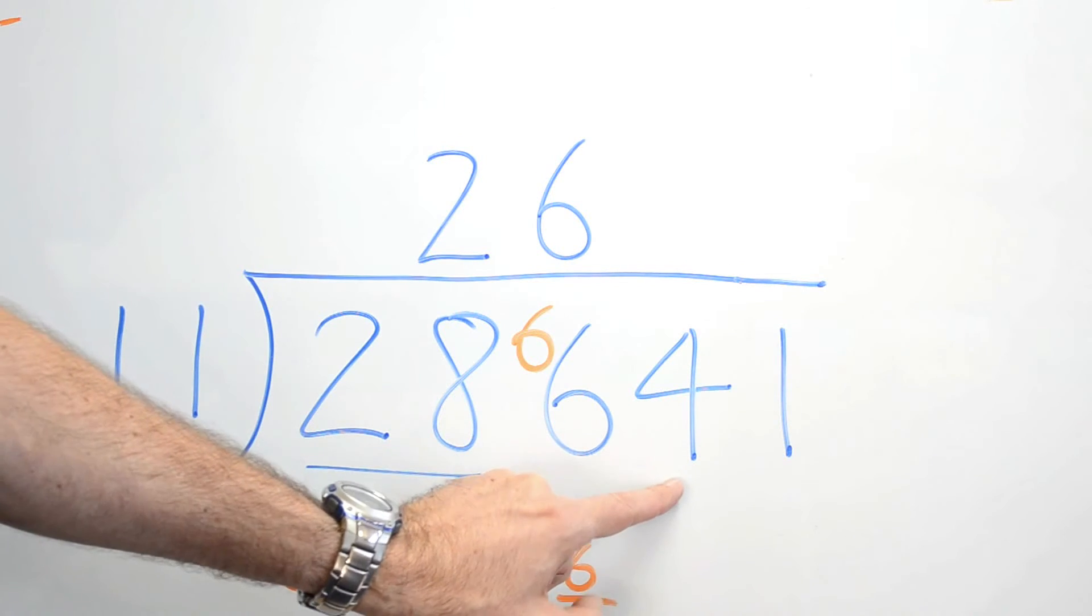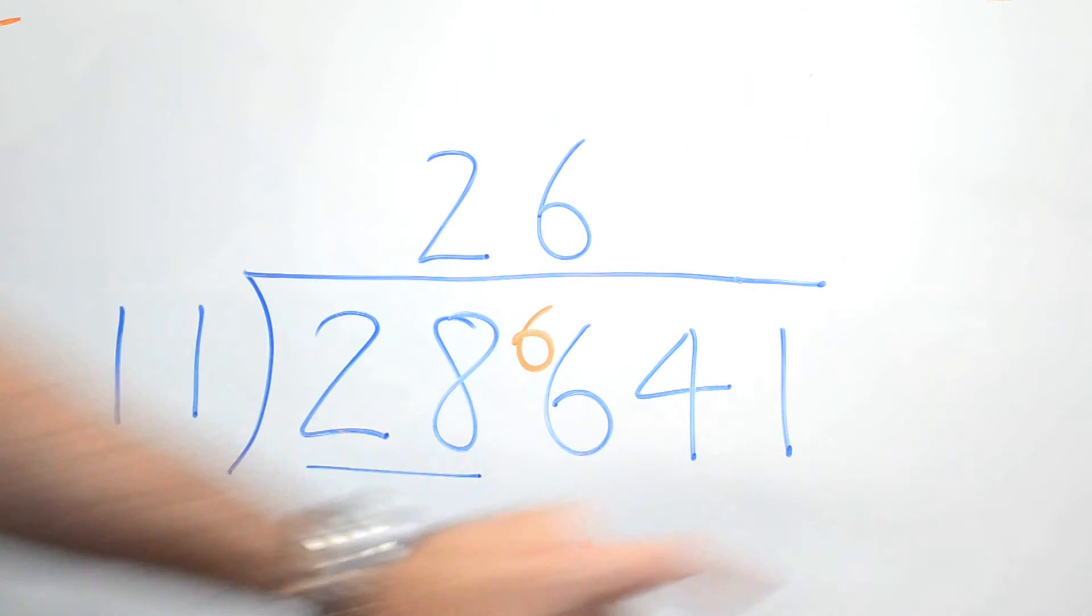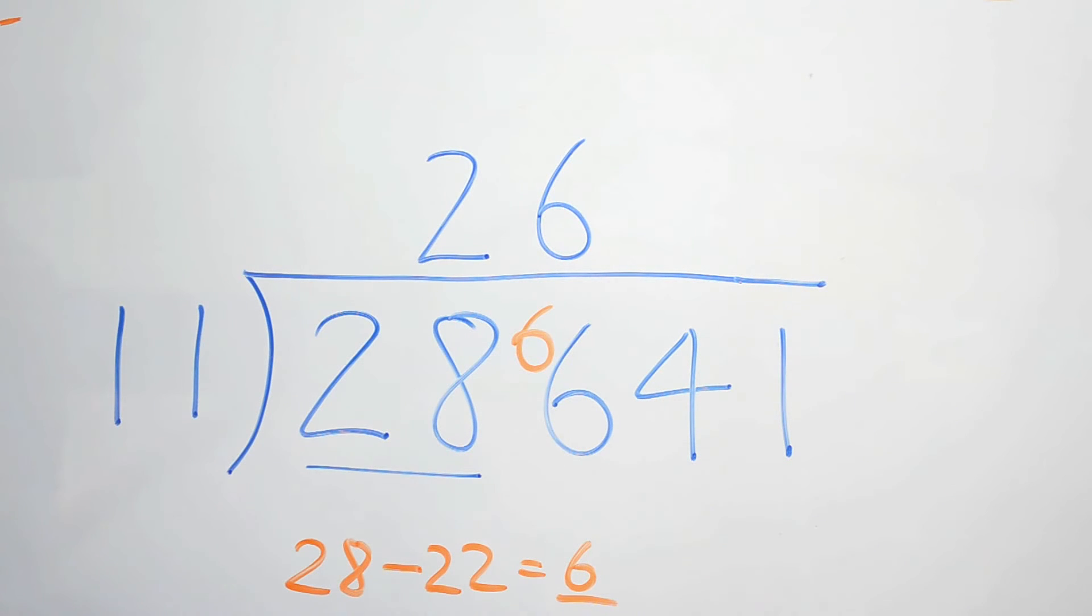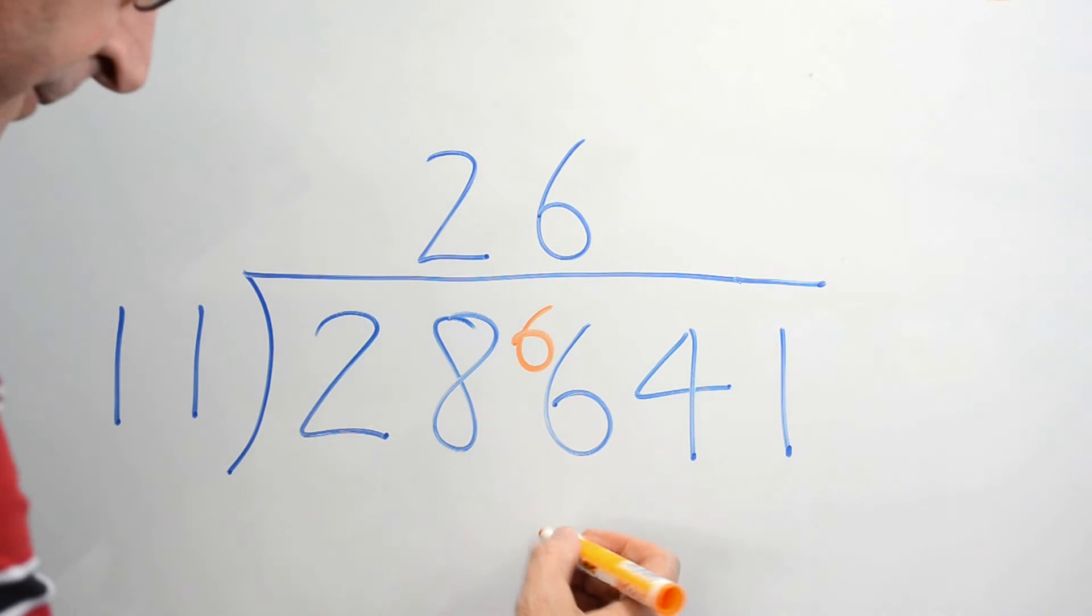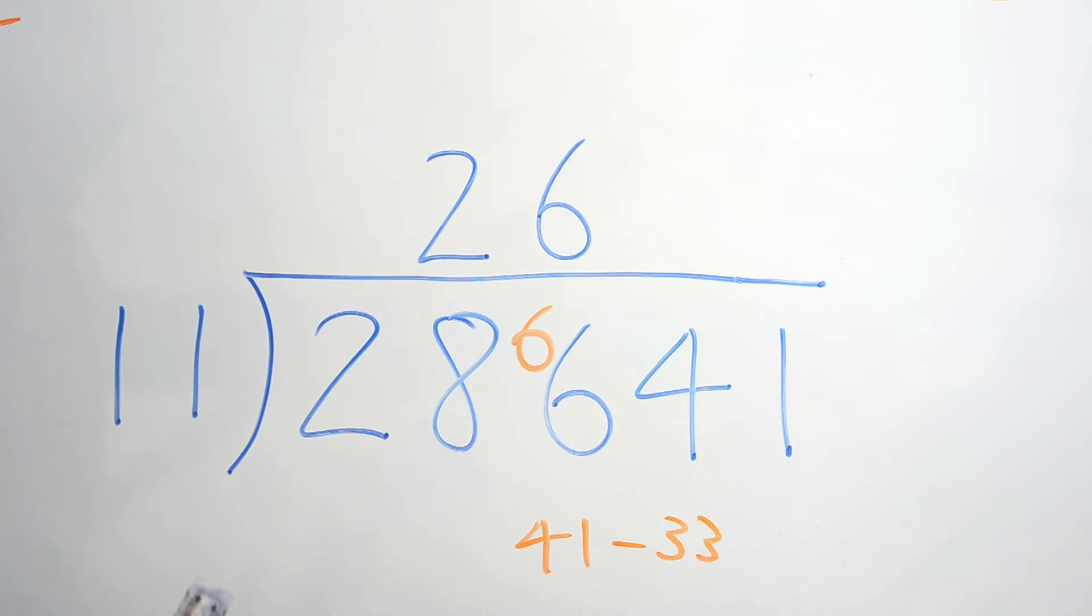But we're across to this one. Now, we can't fit 11 into 4, obviously, but we can fit it into 41. How many times can we fit it into 41? The closest you can get is 33, so you would put a 3 up the top, and you would have a... We can do the same thing again, can't we? We can say 41, take away 33 to get our remainder.